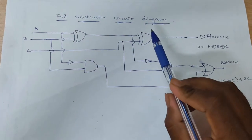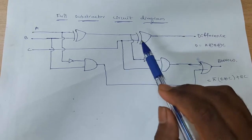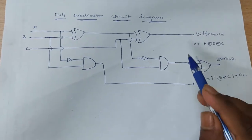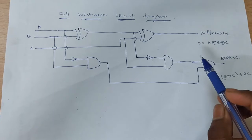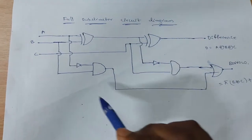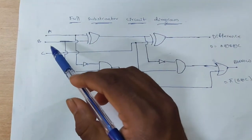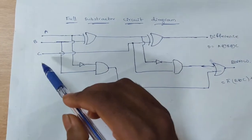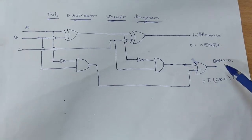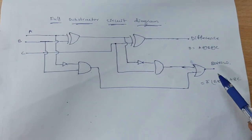Today's experiment is the full subtractor. It is used to subtract three bits at a time. This is the circuit diagram of the full subtractor — it has three inputs A, B, C and two outputs: difference and borrow.